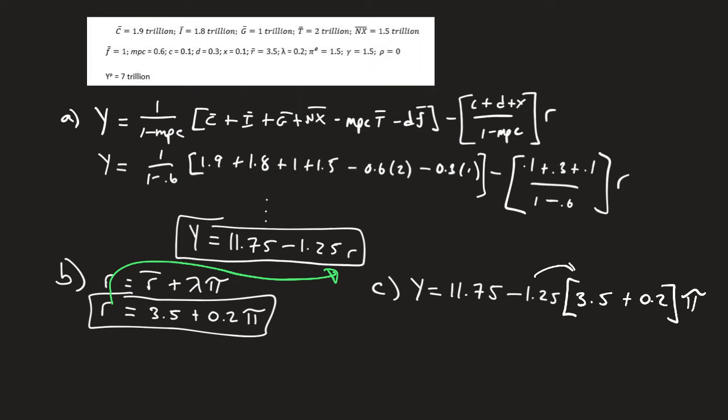We're going to have to distribute this through, simplify everything. You can do that algebra out. And what we'll end up getting is 7.375 minus 0.25 times pi. So now we have my aggregate demand curve.